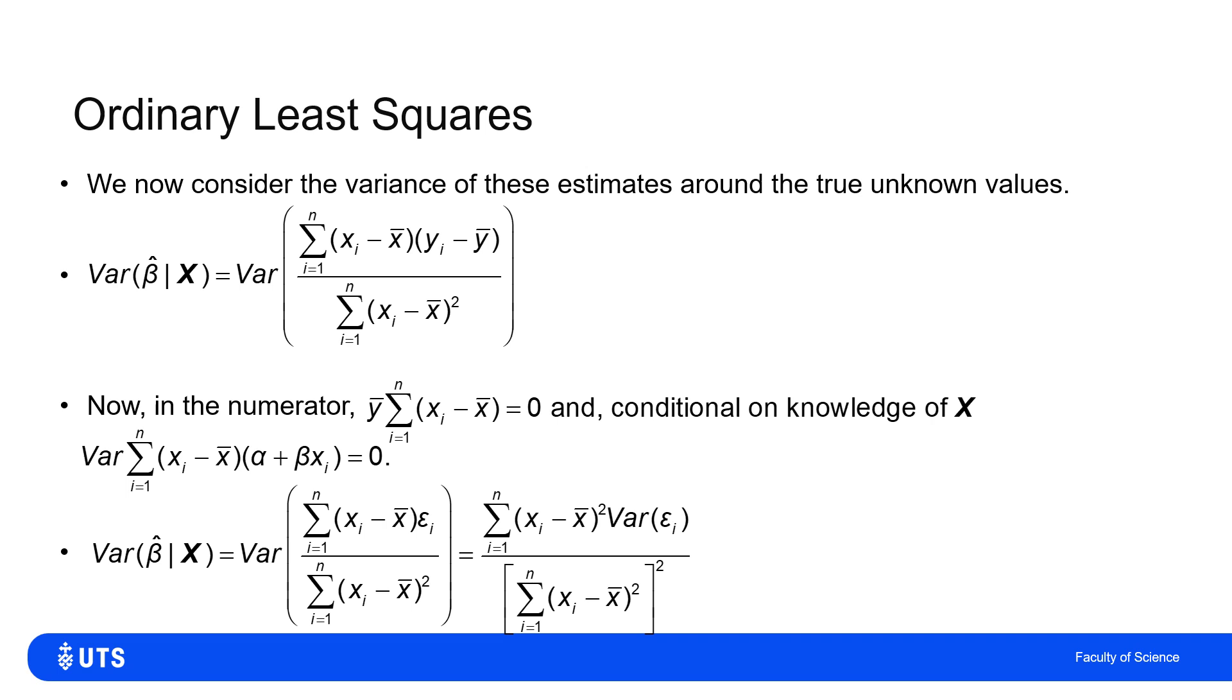So simplifying by removing that term, all I'm left with in the top is the sum of the (xi - x̄)² times the variance of the residual. And so the variance of the residual is, well, whatever it is, σ², and I'll still be left with this sum in the denominator.